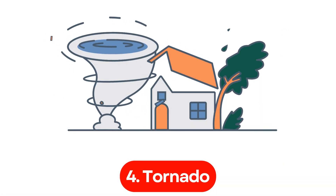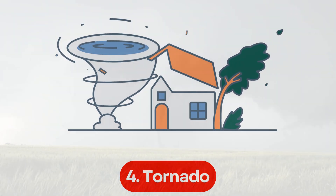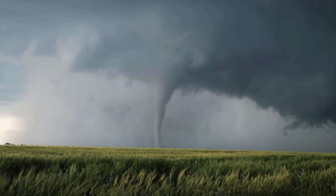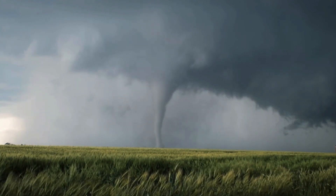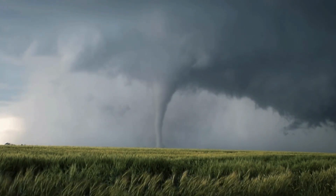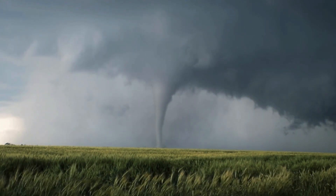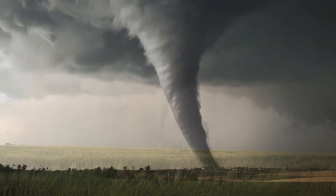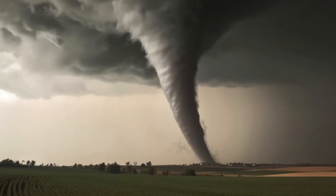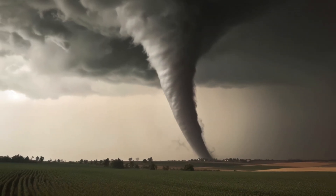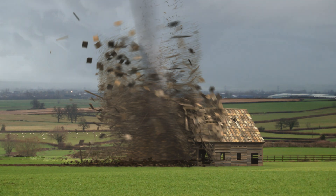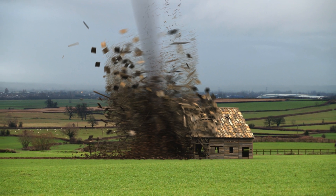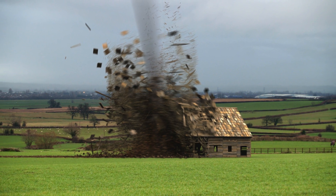Number 4. Tornado. Tornadoes are violent, rotating columns of air extending from thunderstorms to the ground. Their strong winds can uproot trees, destroy buildings, and cause widespread devastation.